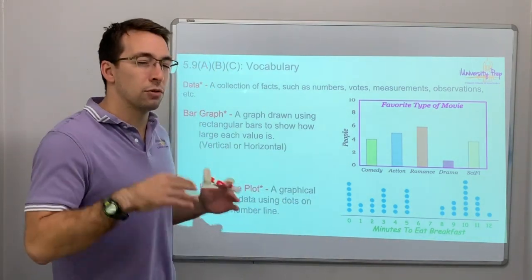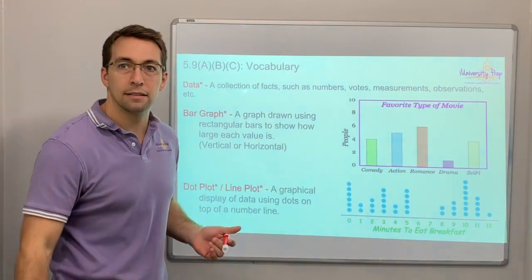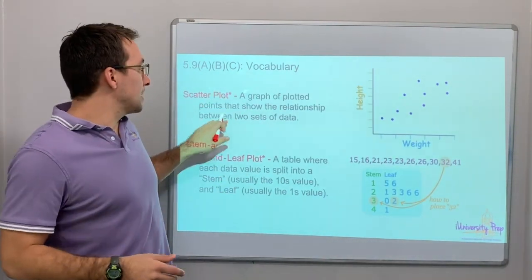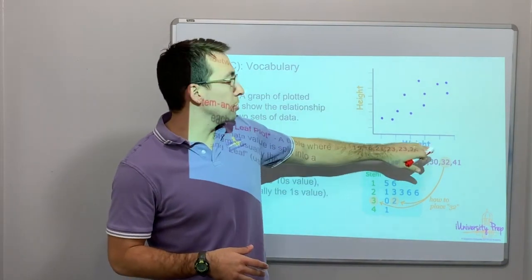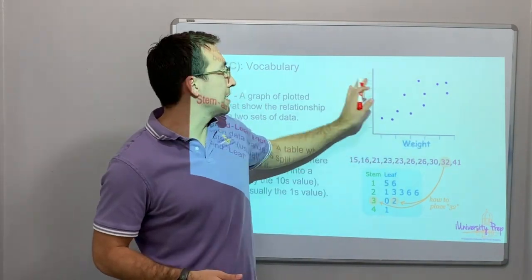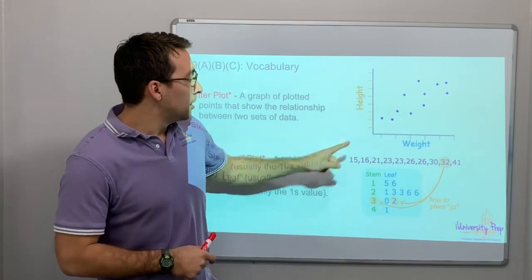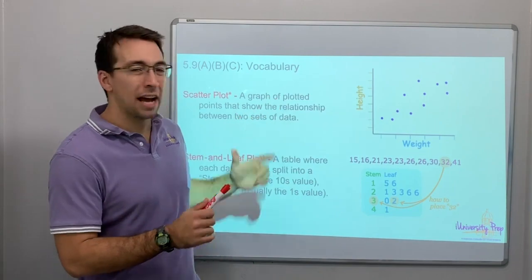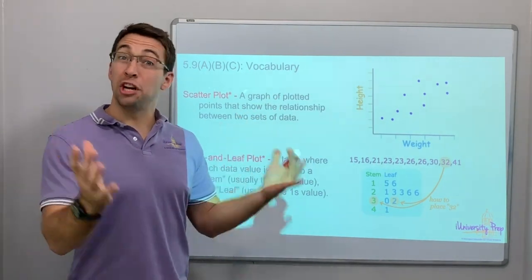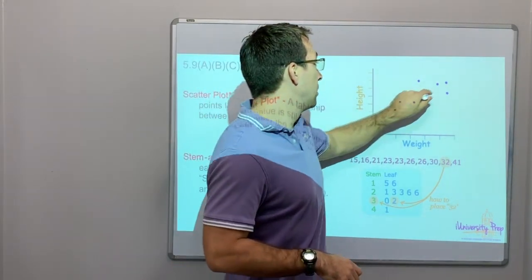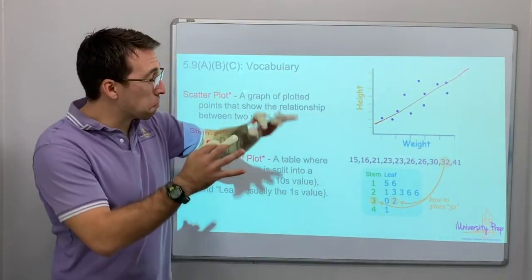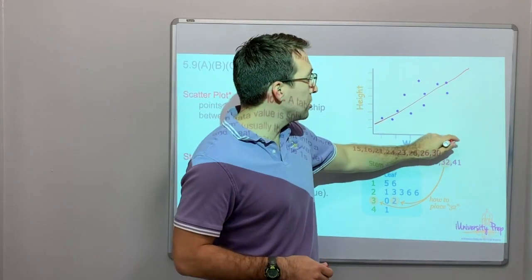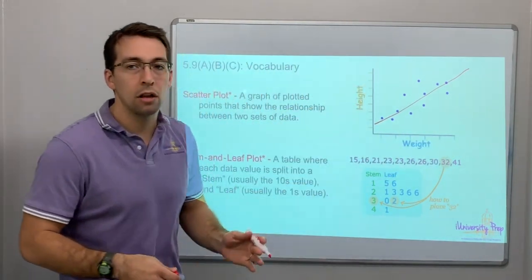Dot plots and bar graphs are really good for visually seeing something very fast. A scatter plot shows your two variables along your x-axis and your y-axis. Here's people's weight — look, as they gain weight, what do they do? They get taller. So scatter plots are good for general visualizations. Here's a pattern — it seems like a pretty loose pattern, but we can draw a line through the middle of it. As you weigh more, you also get taller. Makes sense.